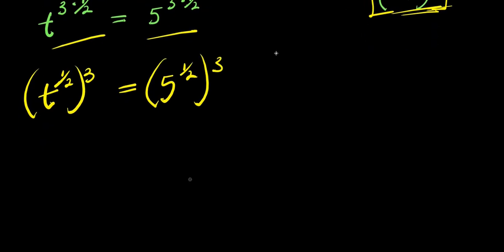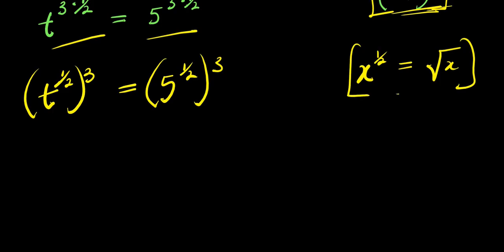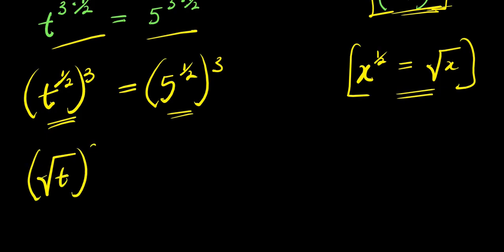Now we apply another identity: x to the power of 1/2 is the same as the square root of x. Applying that here, we have the square root of t, raised to the power of 3, equals the square root of 5, raised to the power of 3.